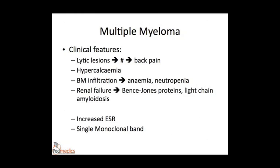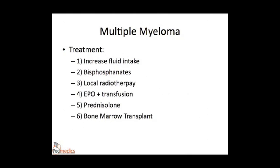An important differential of myeloma is monoclonal gammopathy of undetermined significance (MGUS), where there is paraprotein in the blood but no underlying multiple myeloma or other lymphoproliferative condition. Treatment is largely symptomatic: for renal failure, high fluid intake and correction of dehydration; for hypercalcaemia, rehydration and bisphosphonates; for bone lesions, local radiotherapy and long-term oral bisphosphonates; and for anaemia, EPO and transfusions. Specific therapy aims to slow disease progression — classical therapy involves melphalan and prednisolone, or the VAD regimen. For younger patients, bone marrow transplantation is also an option.